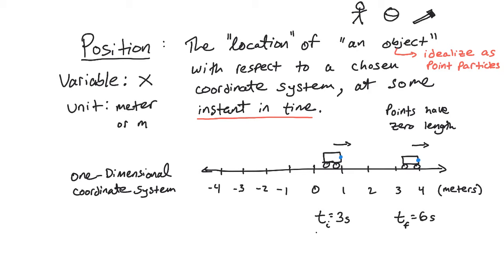All right, so how would we write this? Well, we would come along and we'd say that this has an initial position of one meter. And then it has a final position of four meters.